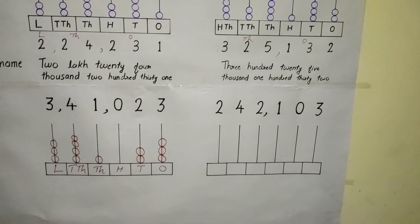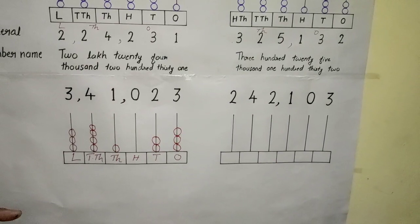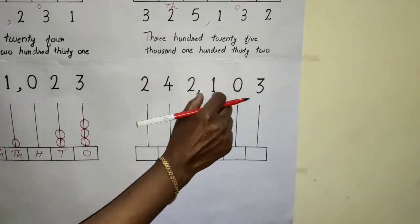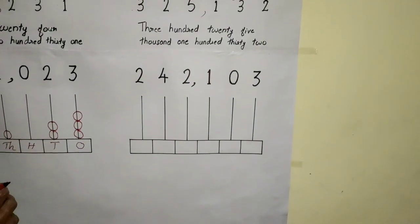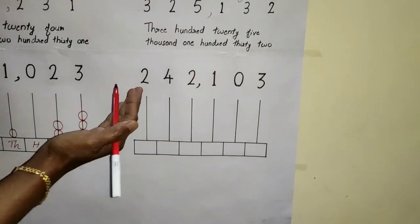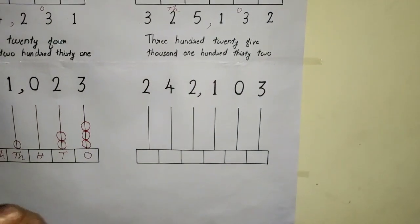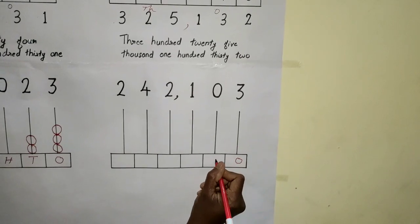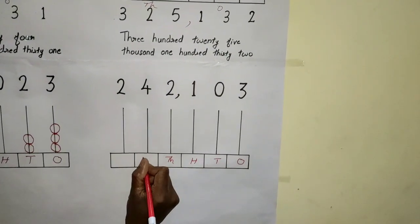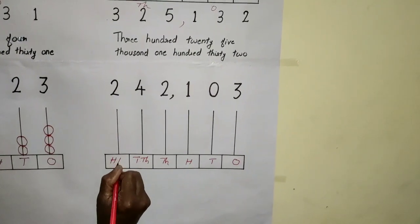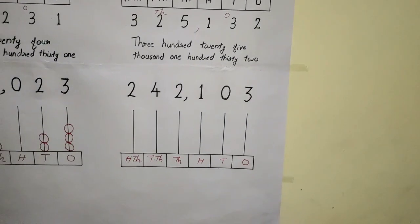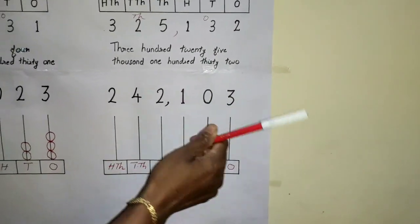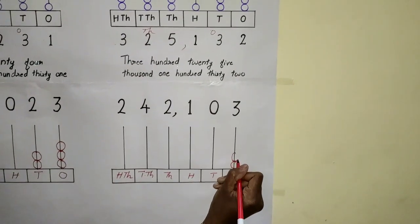Similarly, we can represent numbers in the international system on Abacus. Here you see a number in the international system. After the first three digits there is one comma, so it is very clear this is the international numbering system. The number is two hundred forty-two thousand, one hundred three. To represent this number on Abacus, we write the places according to the international numbering system: ones, tens, hundreds, thousands, ten thousand, and hundred thousands. The number in one's place is three, so we draw three beads: one, two, three.